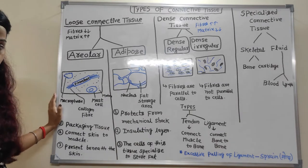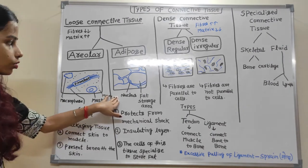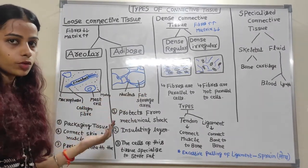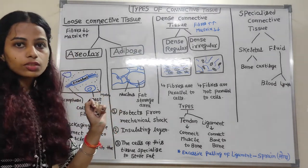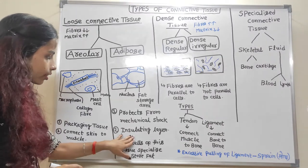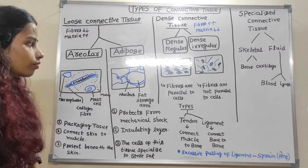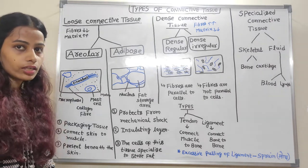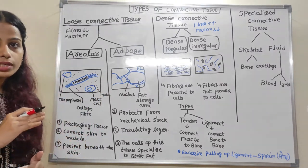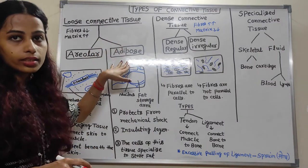Adipose loose connective tissue has a structure where nucleus is present and fat storage area is present, also known as adipose site. The function of adipose loose connective tissue is to protect the body from mechanical shock and it acts as an insulating layer. Fat people don't feel cold because adipose connective tissue is present in greater amounts, whereas thin people feel cold because it is present in lesser amounts.